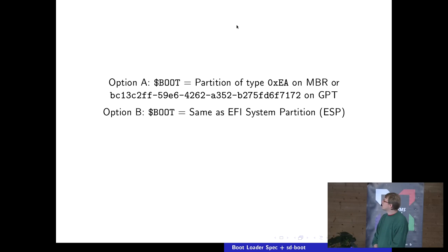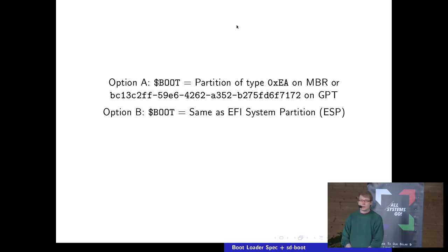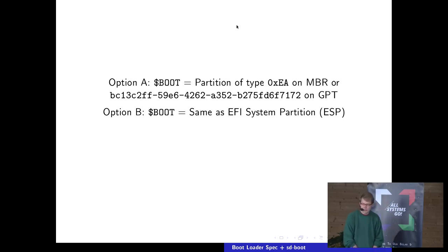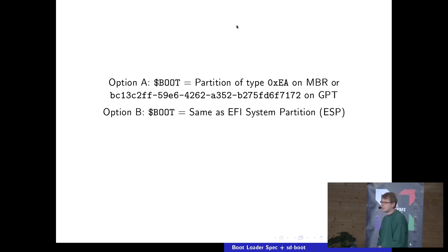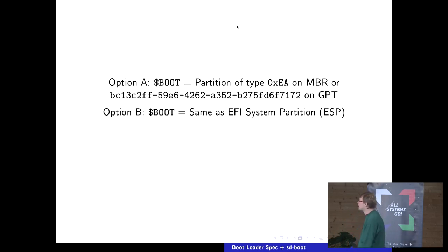Where $boot is: option A is a partition of type EA hex on MBR partition tables, or a partition of a specific UUID type on GPT — we just picked that up because it was not used yet. Option B is that $boot actually equals the EFI system partition. All your current laptops probably boot with EFI these days. The firmware finds a special partition — the ESP — on your hard disk, and starts some binary in it that is traditionally grub, but I want to advertise sdboot instead.